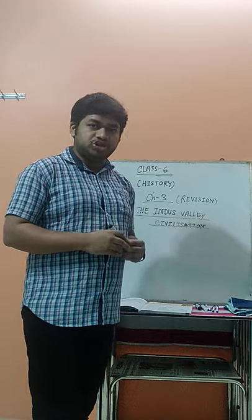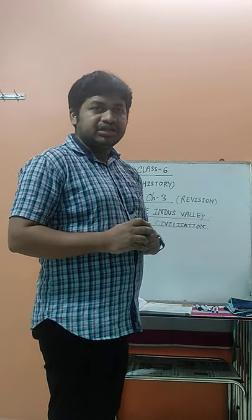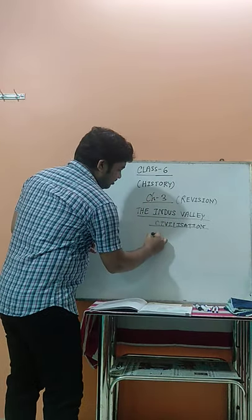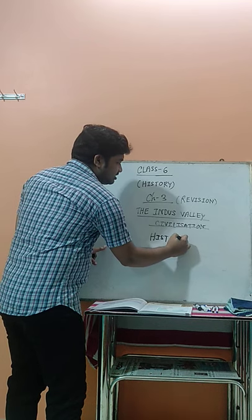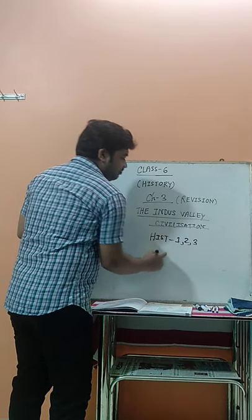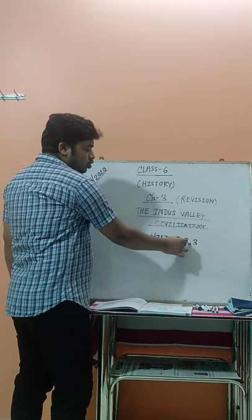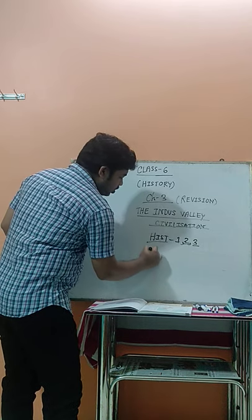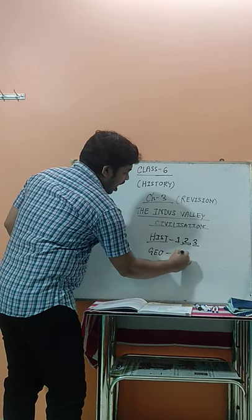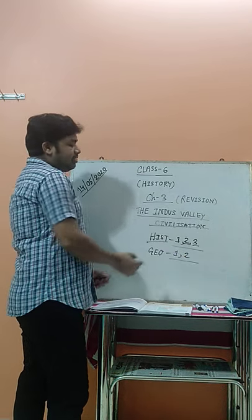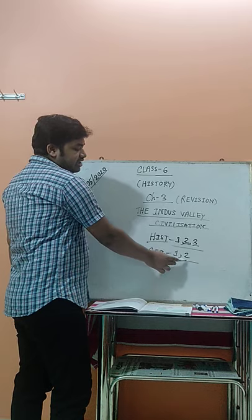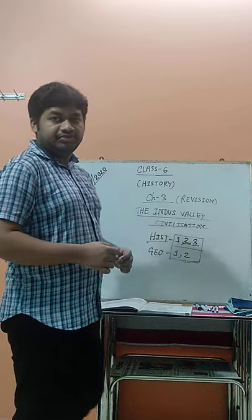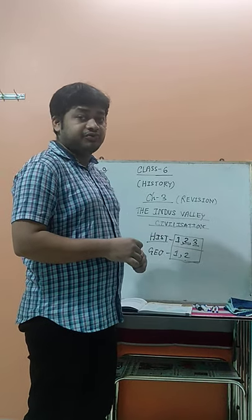First, I want to clarify what you have to learn for the first unit test. From history: chapter 1 (Mesopotamian civilization), chapter 2 (Egyptian civilization), and chapter 3 (Indus Valley civilization). From geography: chapter 1 (representation of art) and chapter 2 (landforms). So these 5 chapters are your syllabus for the first unit test.